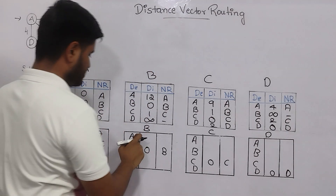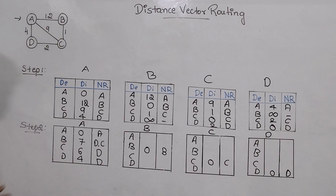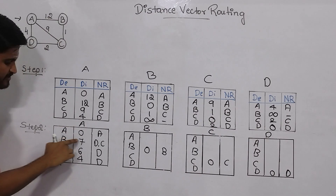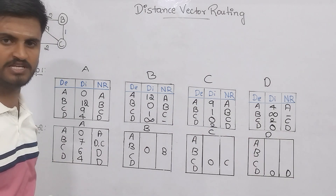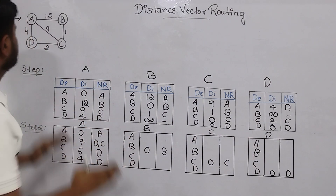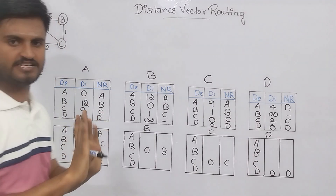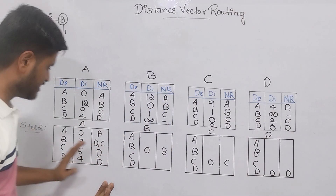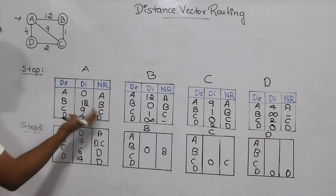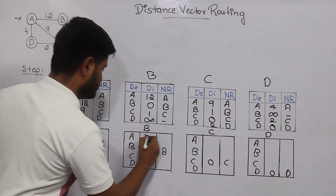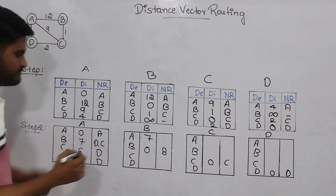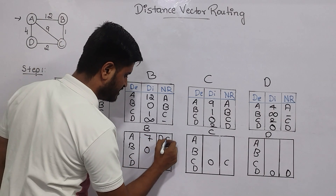From B to A: since from A to B the shortest distance is 7 and directed edges are not given, from B to A it will also be 7. The same routers D and C are used, so I write D and C here as well. From B to C: the shortest distance is 1 direct, so I write 1 and next router C.